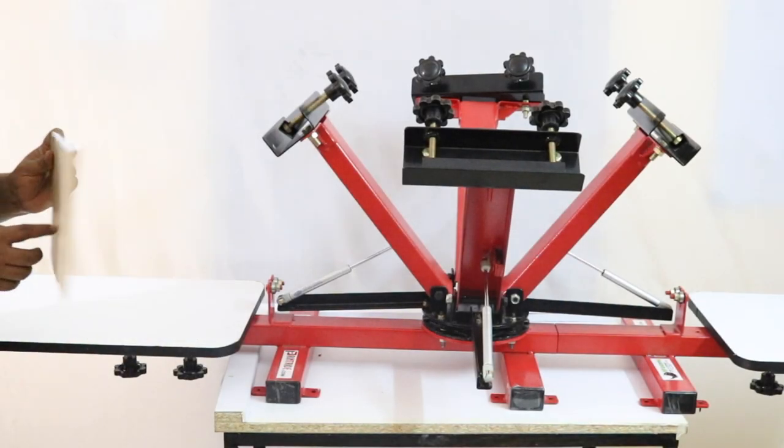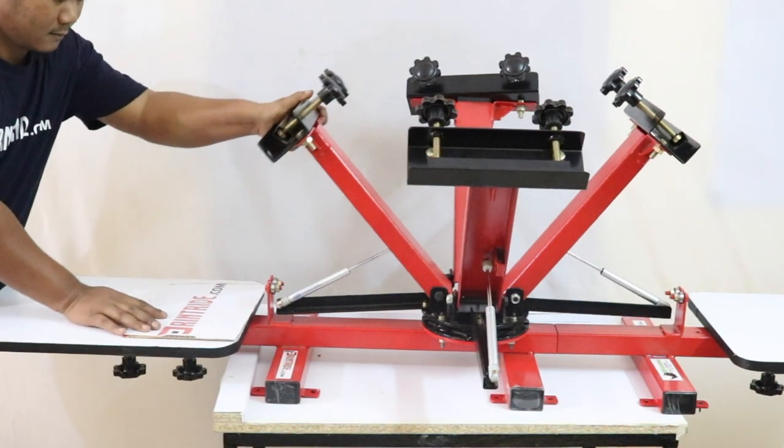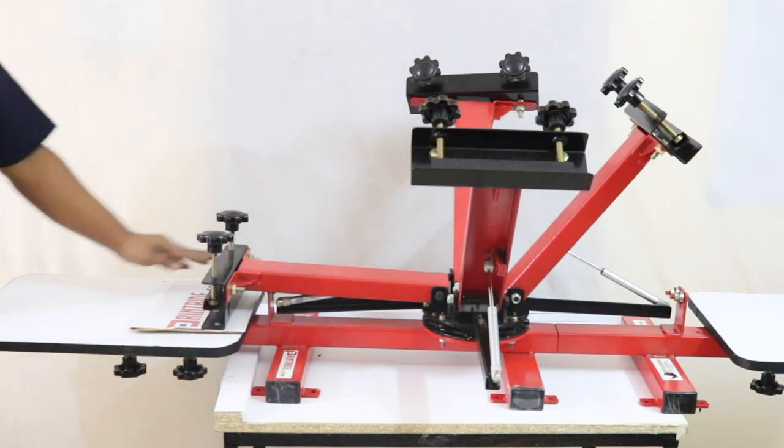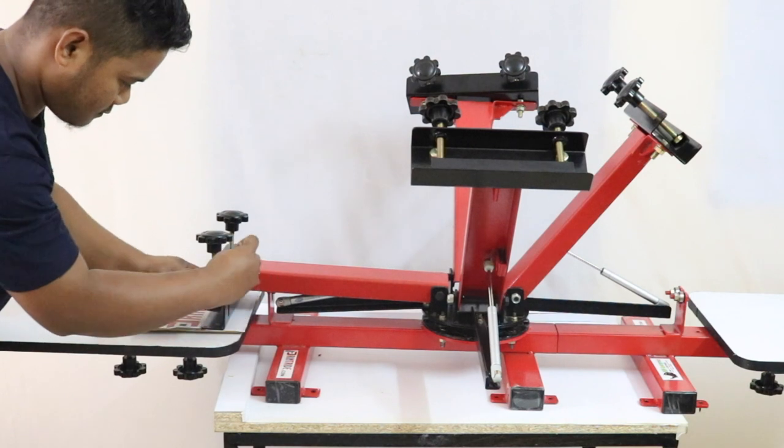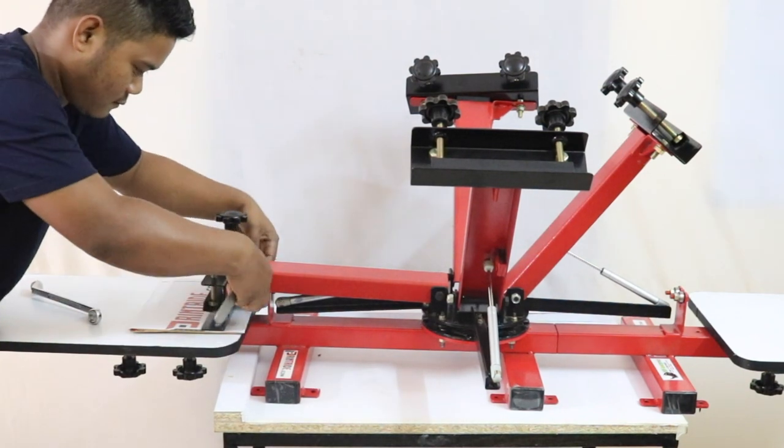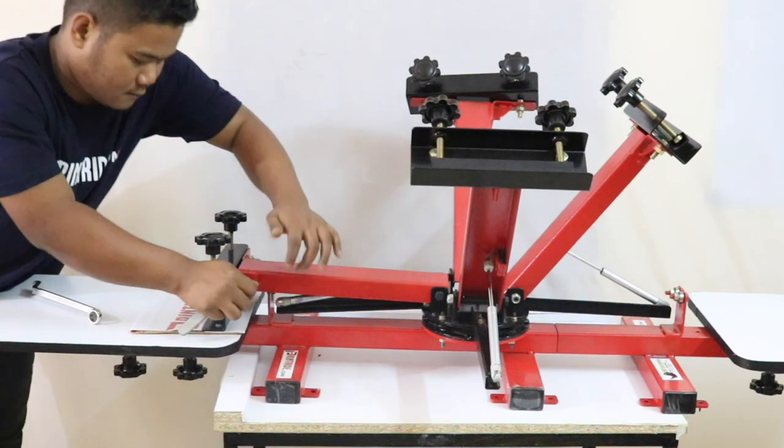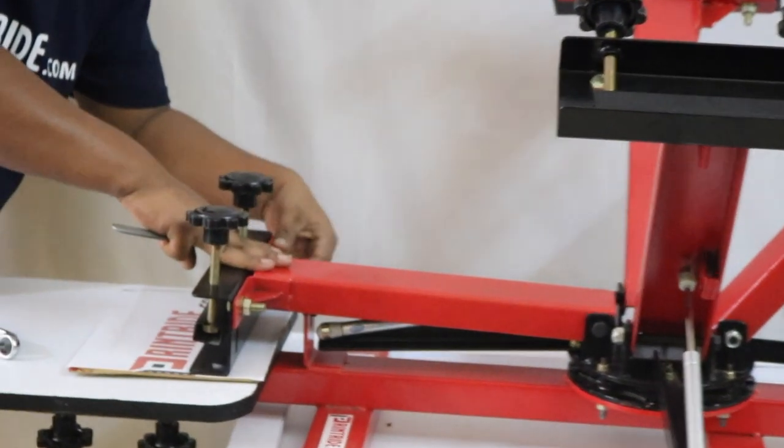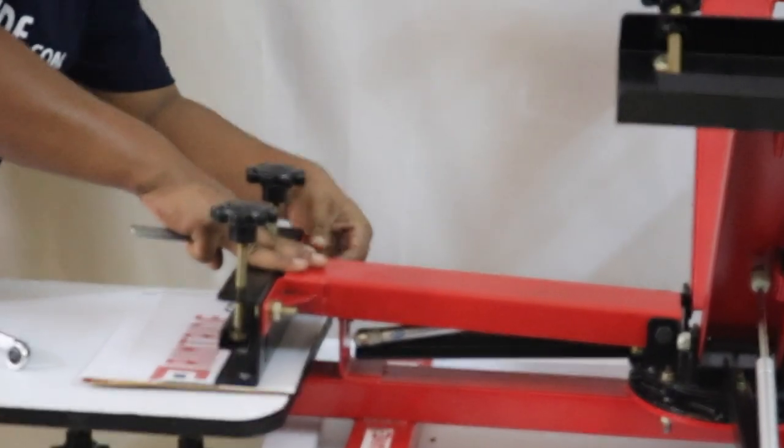And this is the board, cardboard we are using. This is actually for off contact adjustment. While printing, the screen should not be the same height as the palette, it should be a little bit higher than the palette. For that reason we are using off contact adjustment.